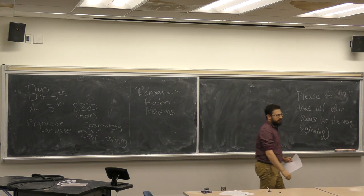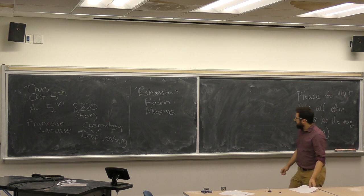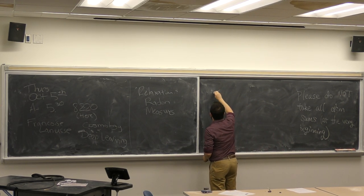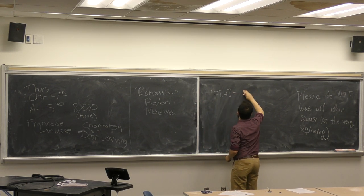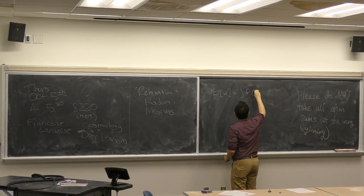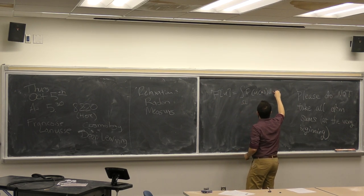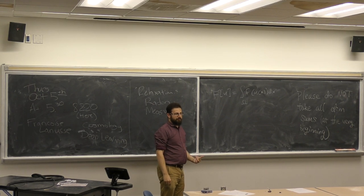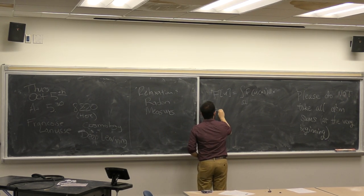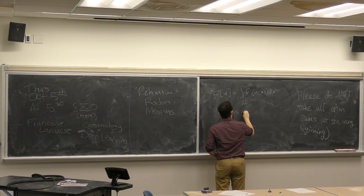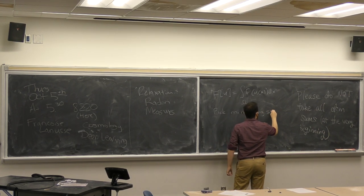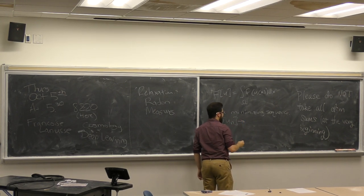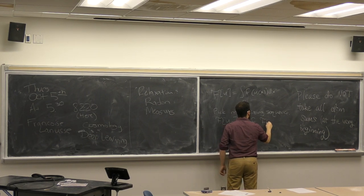It starts with a pretty familiar situation, at least for people who are into PDEs and calculus of variations. We have some integral functional — the integral over Ω of f(u, x) dx for some integrand f. The normal game is we want to find a minimizer for this functional, so we pick a minimizing sequence: a sequence u_n such that F(u_n) converges to the infimum, inf F.